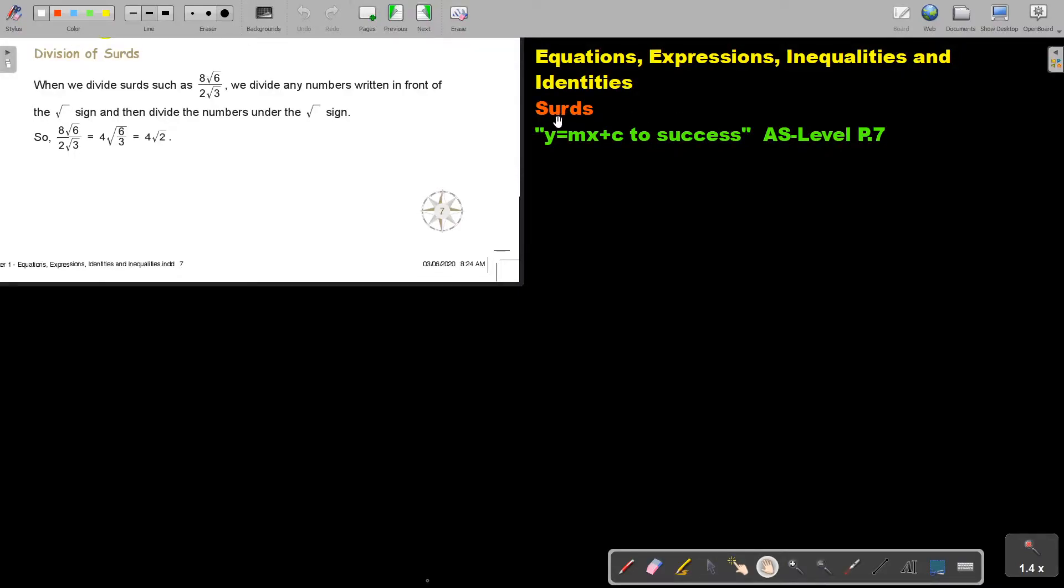In this video we are going to continue with surds. You will find this on page 7 in the Namibia AS level mathematics textbook y equals mx plus c to success.